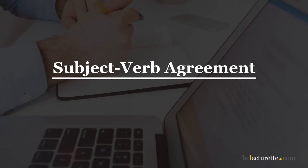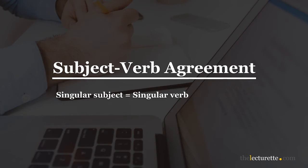Subject-Verb Agreement means that subjects and verbs must agree with each other in number. In other words, if the subject of a sentence is singular, the verb that goes with it needs to be singular as well. And if the subject is plural, the verb needs to be plural. Even though this seems pretty straightforward, there are some situations in which using the right form of the verb could cause problems.